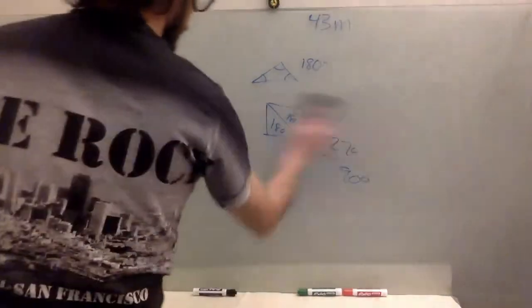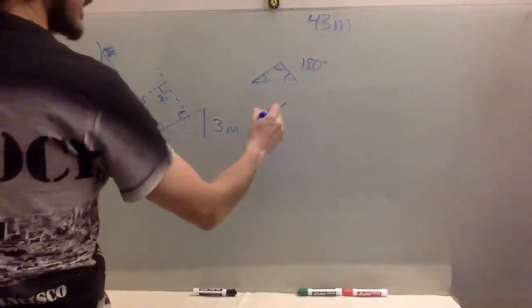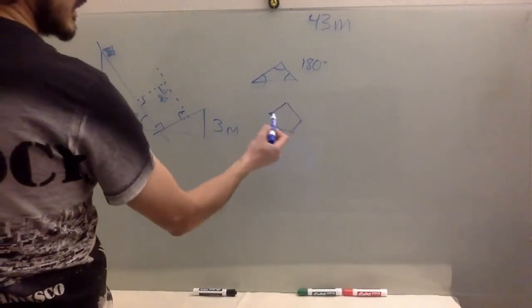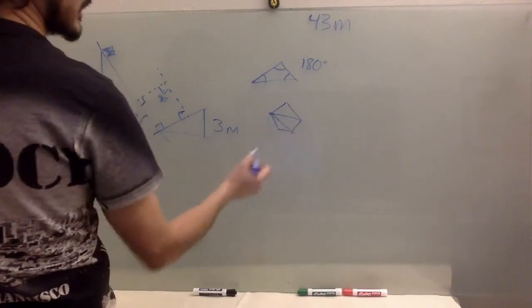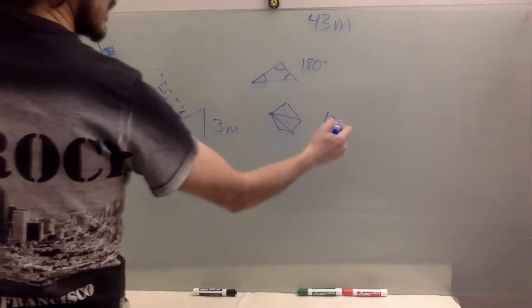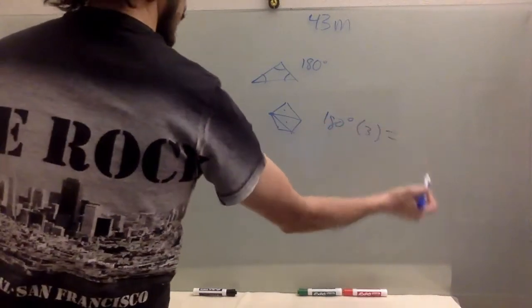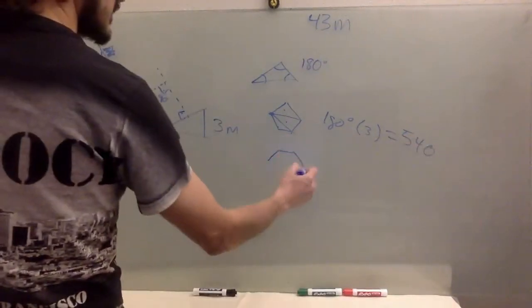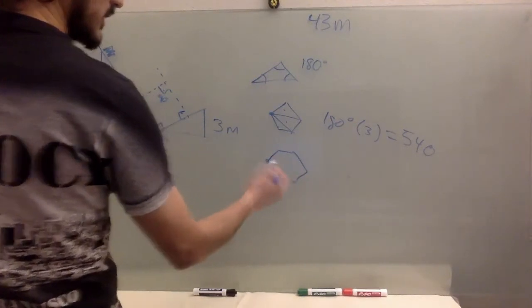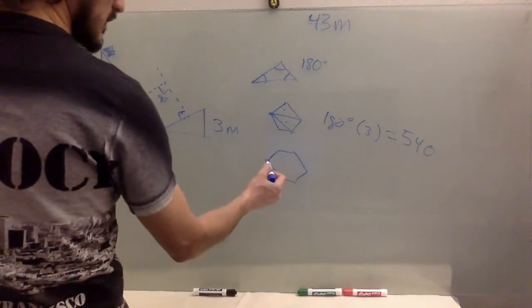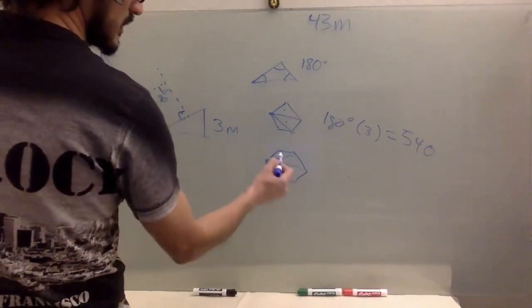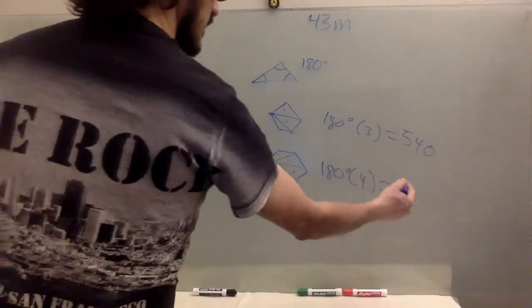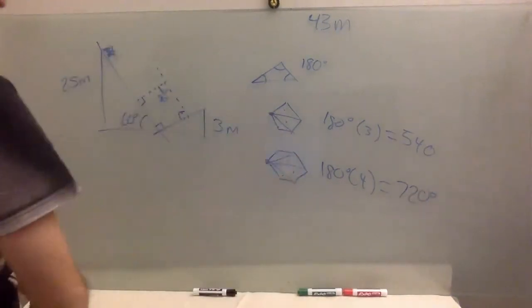So this is a good one to know. If you have a pentagon, you pick any side and you draw your triangles. One, two, three. Five hundred and forty. If you have a hexagon, pick any side, any corner. You draw your triangles. And so on. So that one is good to know.